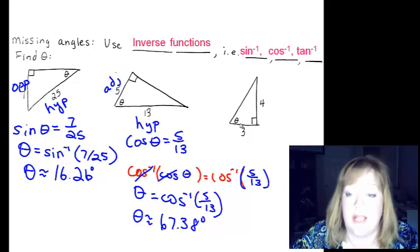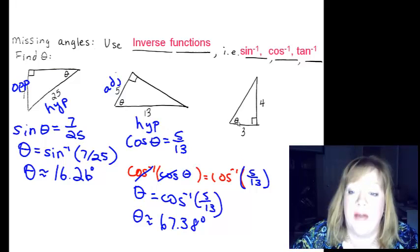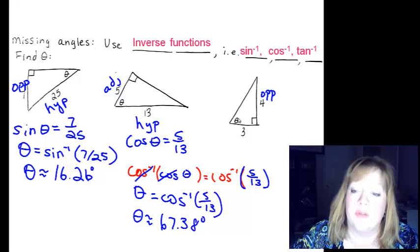Alright, so let's look at the last example that I have for you. Here's my angle, hypotenuse is up there, but I don't have a value there. So I have the four, which is across the way, that's opposite. And the three, which forms a side of my angle, that's adjacent. Opposite over adjacent, that's tangent.